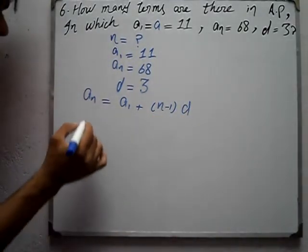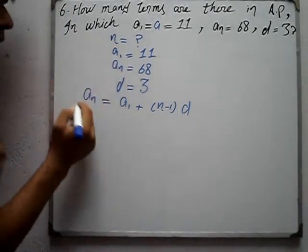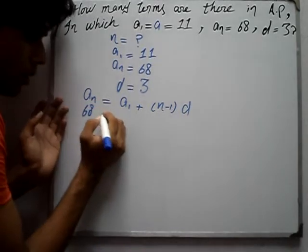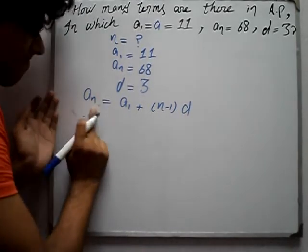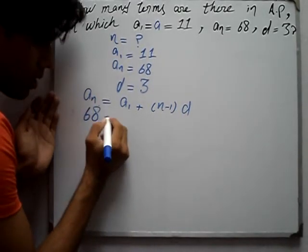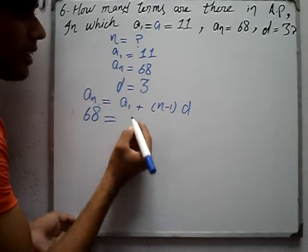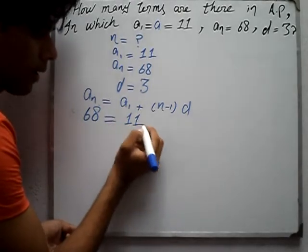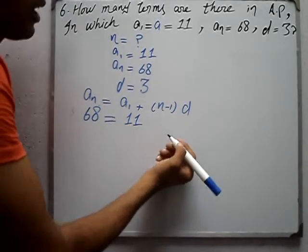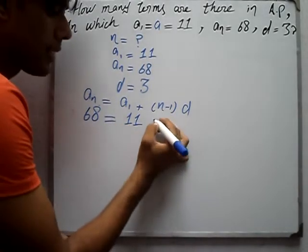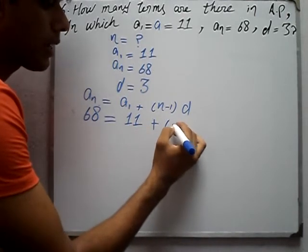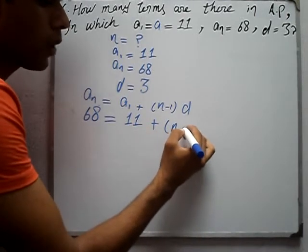Substituting the values: 68 equals 11 plus n minus 1 times d.